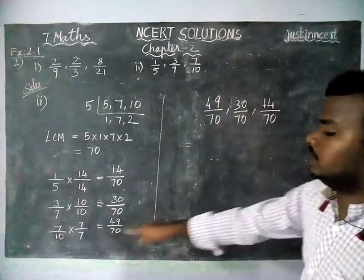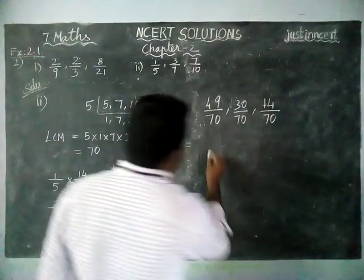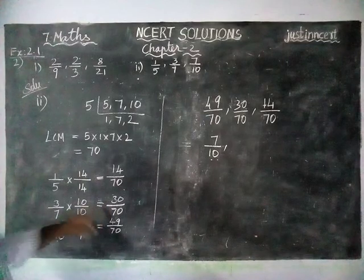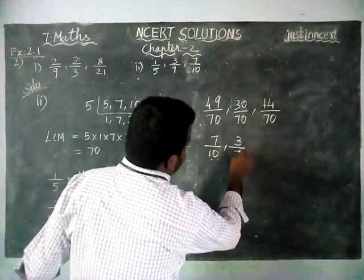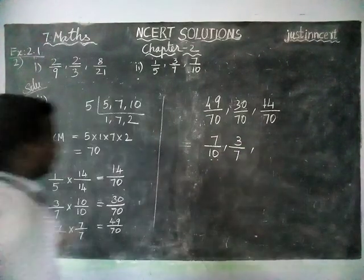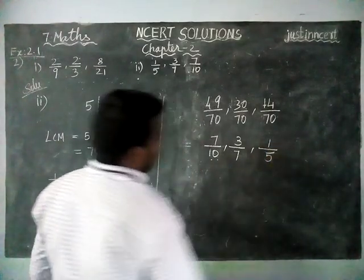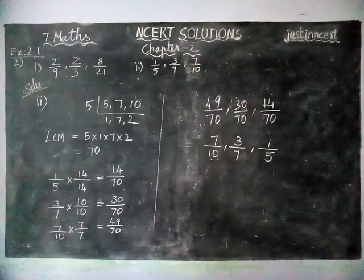And here, 49 by 70 equals 7 by 10, 30 divided by 70 equals 3 by 7, 14 by 70 equals 1 by 5. Therefore, this is the required descending order.